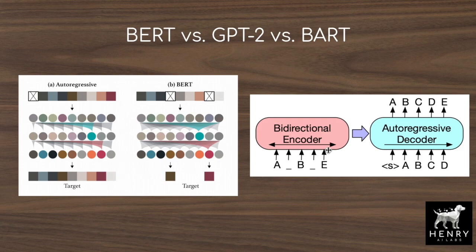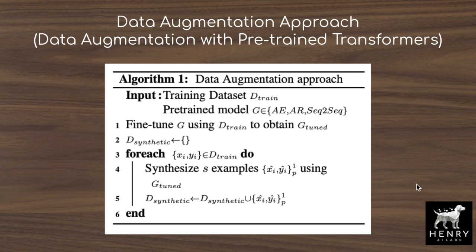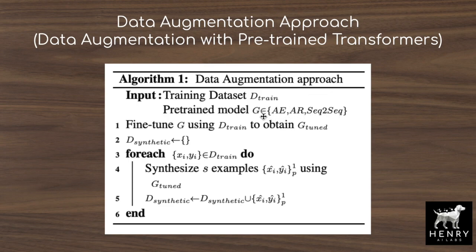The high-level approach from the Alexa AI researchers uses this algorithm: we have our training dataset D_train — say only 150 labeled question examples — and our pre-trained model from the Hugging Face Transformers library (BERT, GPT-2, or BART). We fine-tune the pre-trained model on our small labeled dataset to obtain G_tune. We have a hyperparameter S for how many examples to generate per real example, append that synthetic data to the original dataset, and train on this union of real and synthetic data.